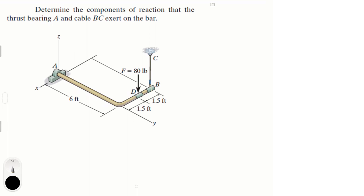Alright guys, this problem says determine the components of reaction that the thrust bearing A and cable BC exert on the bar. Whenever you have this problem, I always tell you the same thing: draw a little map for the X, Y, and Z axes just somewhere on the side so it's easy to do all the parts.